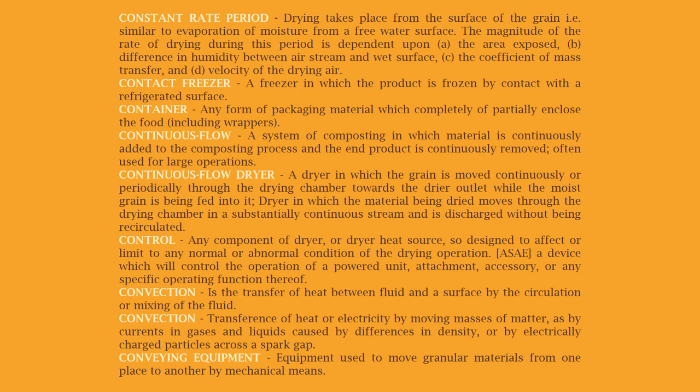Control: any component of a dryer or dryer heat source designed to affect or limit any normal or abnormal condition of the drying operation; a device which will control the operation of a powered unit, attachment, accessory, or any specific operating function thereof. Convection: the transfer of heat between a fluid and a surface by the circulation or mixing of the fluid; the transference of heat or electricity by moving masses of matter, as by currents in gases and liquids, caused by differences in density.